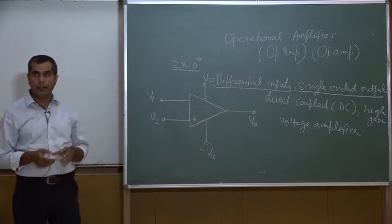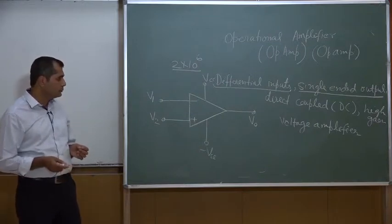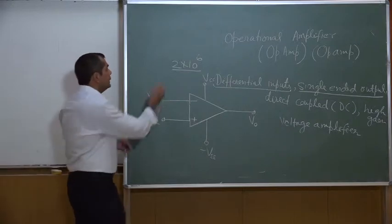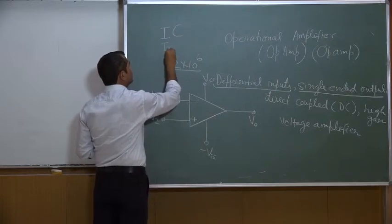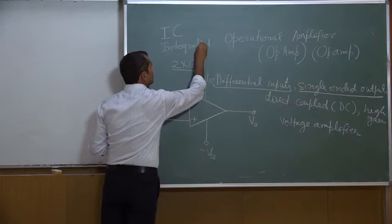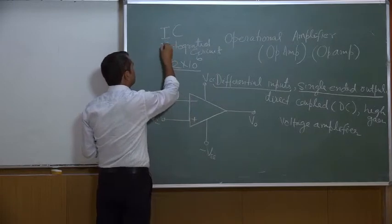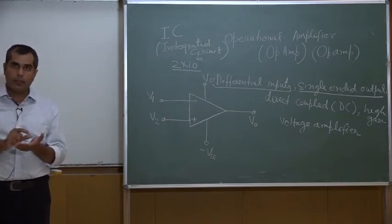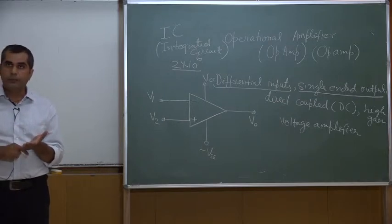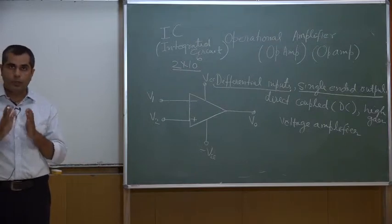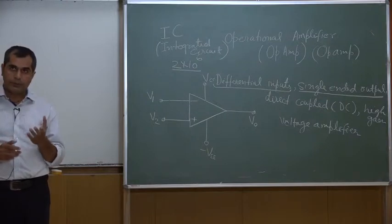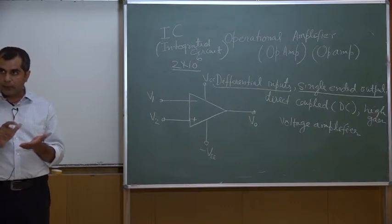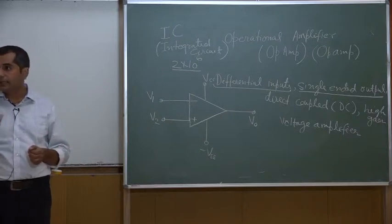For any amplifier the power supply is an integral part. This operational amplifier comes in IC form — integrated circuit form. Integrated circuit means whatever is in that operational amplifier, everything is fabricated on a single substrate. If more than 20 transistors are needed to design one operational amplifier, all those transistors are put on a single chip — you cannot distinguish each individual transistor.